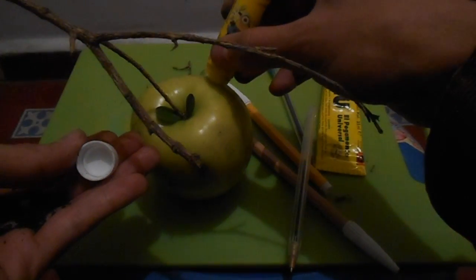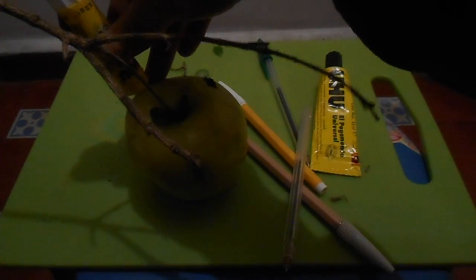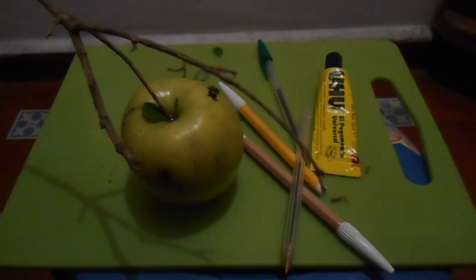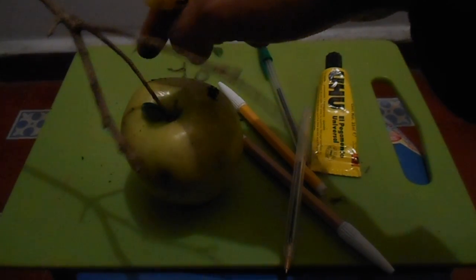Now we need more glue. We're going to add soil. This soil helps to make the apple more organic.